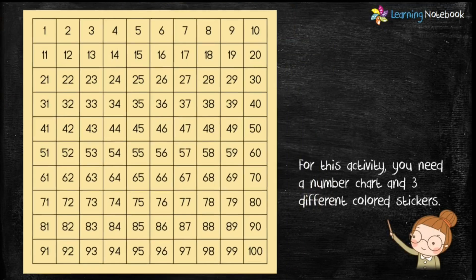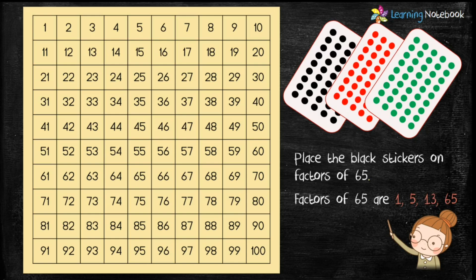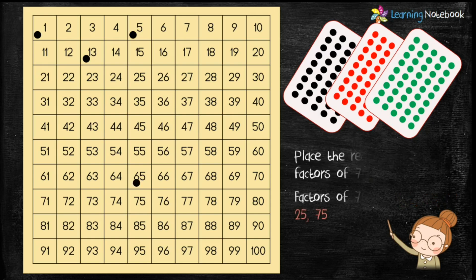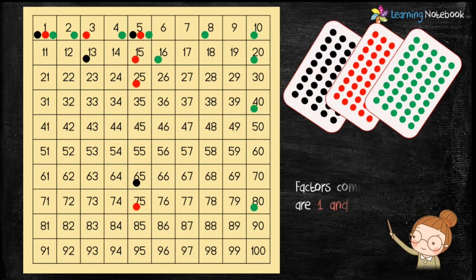Now let's start with the activity. For this second activity you need a number chart and three different colored stickers. Now place the black stickers on factors of 65, which are 1, 5, 13, and 65. Then place the red stickers on factors of 75, which are 1, 3, 5, 15, 25, and 75. Now place the green stickers on factors of 80, which are 1, 2, 4, 5, 8, 10, 16, 20, 40, and 80.